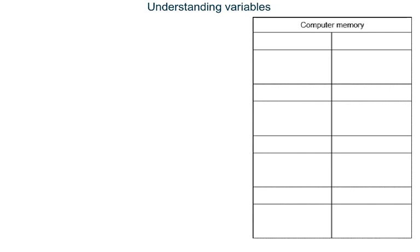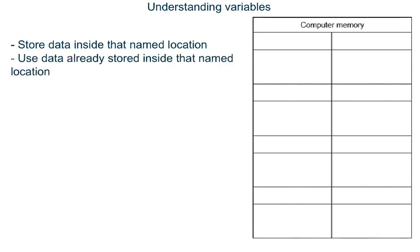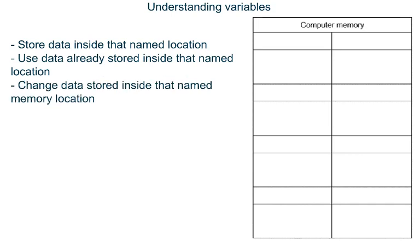To understand Python programming you need to understand variables. A variable is a location in the computer's memory that is given a name. The program can store data inside that named location, use data already stored inside that named location, and change data stored inside that named memory location.